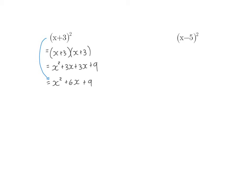In the second one, I'm going to say x times x is x squared. Then for my middle term, it is the first term multiplied by the second term multiplied by two, which will give me minus 10x, and then my second term squared, which is minus five times minus five, and that gives me plus 25.